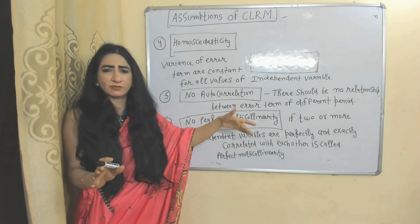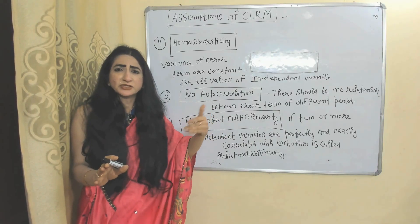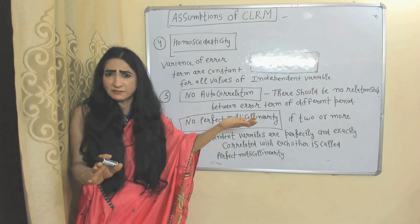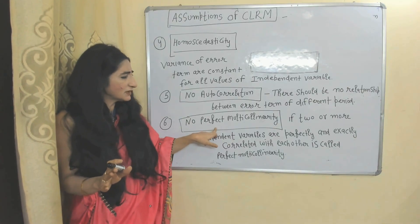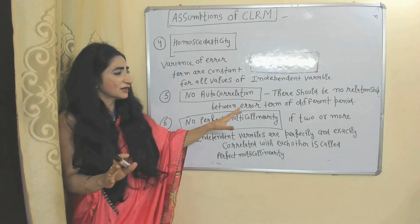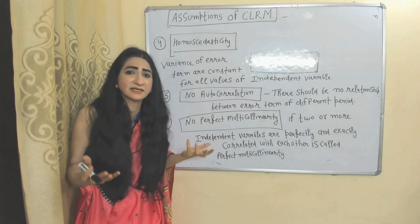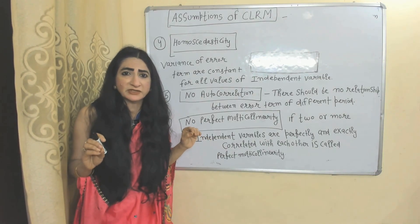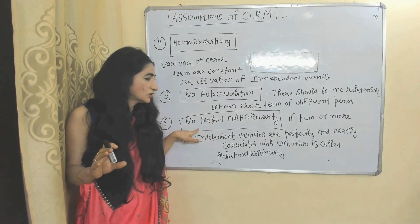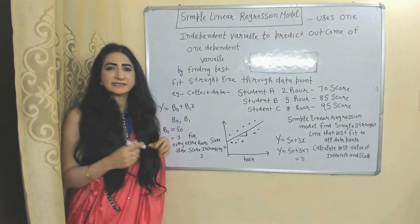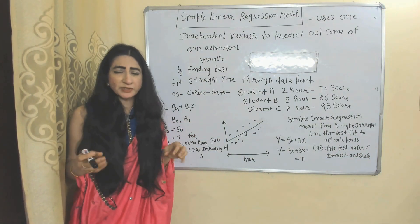Fifth assumption: no autocorrelation, meaning there should be no relationship between error terms of different time periods — the error term of period one should not relate to the error term of any other period. Sixth assumption: no perfect multicollinearity. If two or more independent variables are perfectly and exactly correlated, that is perfect multicollinearity, but the classical linear regression model assumes there is none.